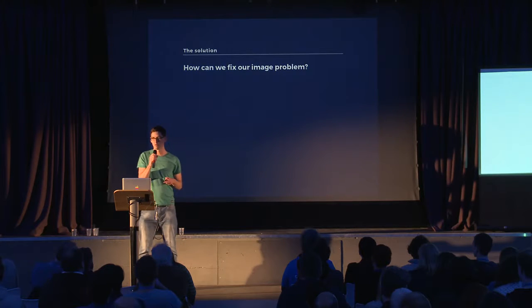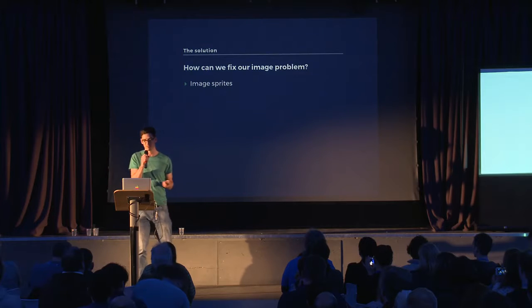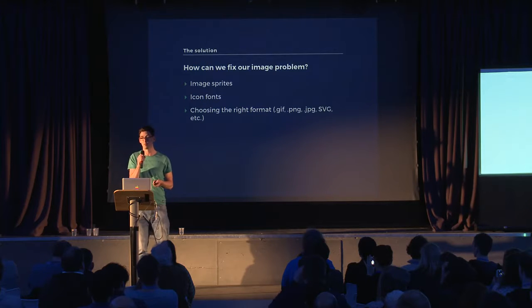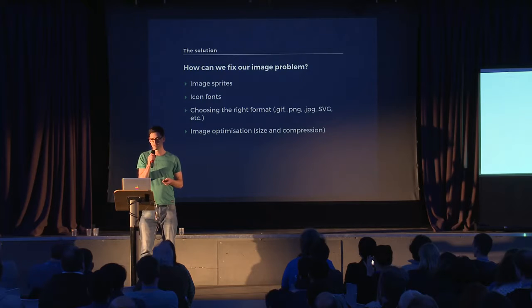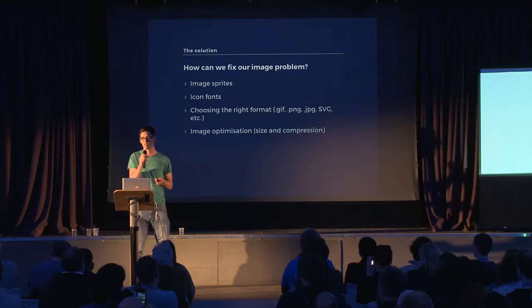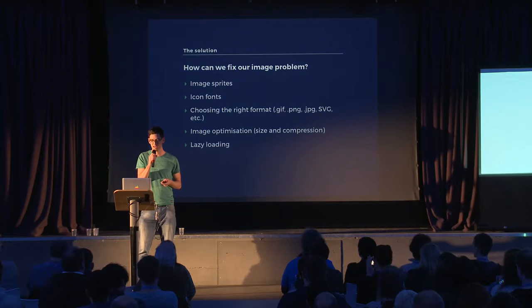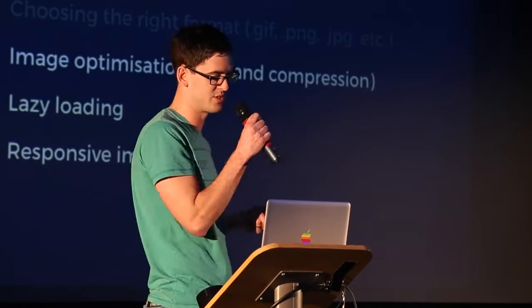So how can we fix it? There are some techniques we've been using already and some newer ones coming along. Some are being phased out — things like image sprites, a technique used to save on HTTP requests, being replaced by things like icon fonts. There's choosing the right format for the image: whether you're using a GIF, a PNG, SVG or whatever. Then there's image optimization, to do with the physical size and compression of an image, plus lazy loading and responsive images. It's those latter three that I'm going to be talking to you about.